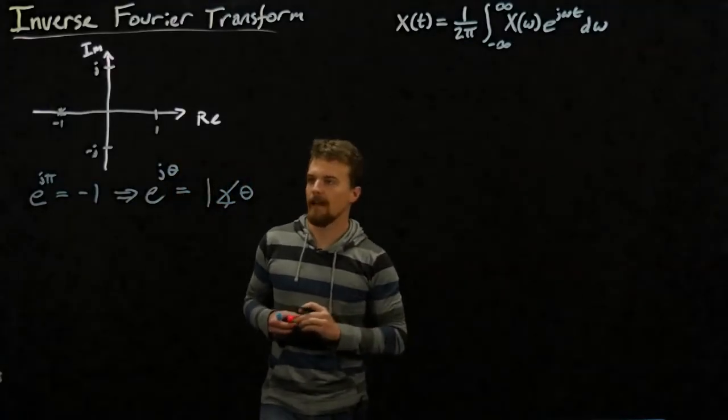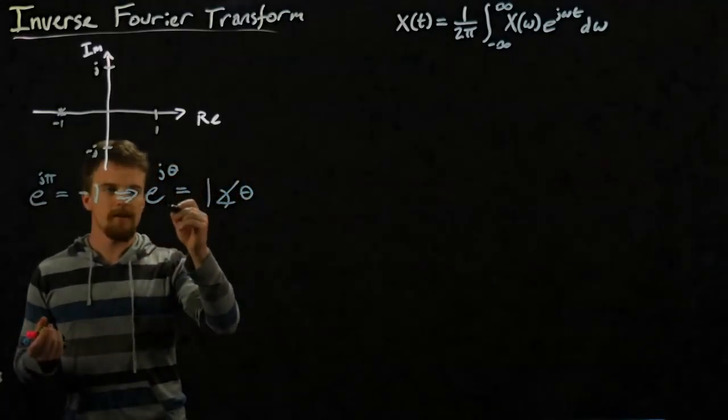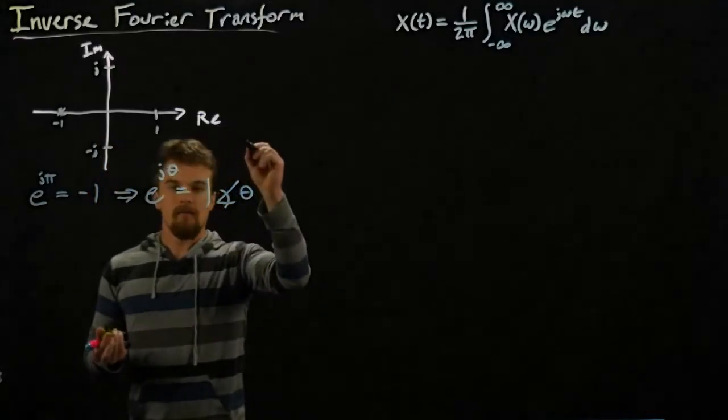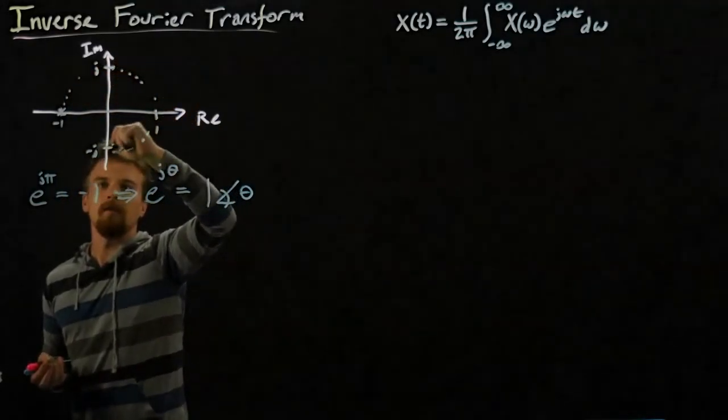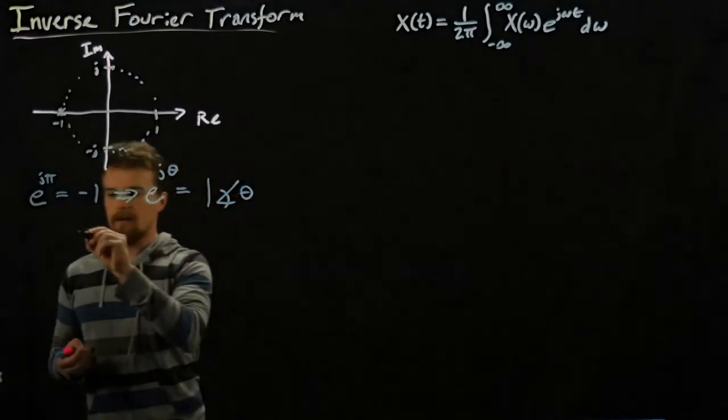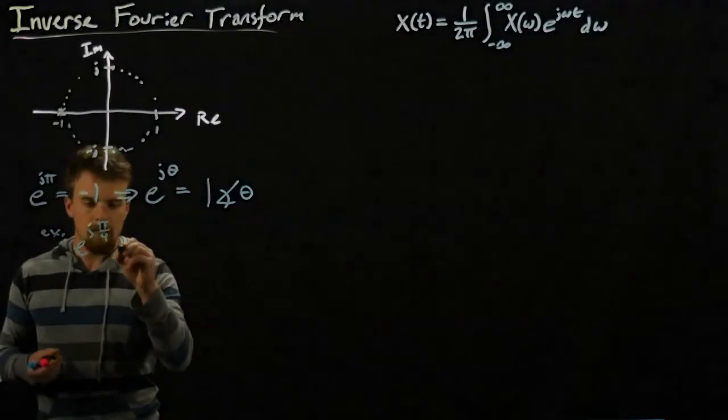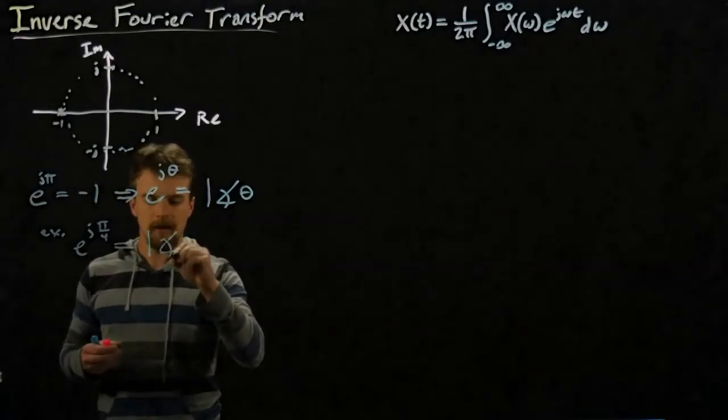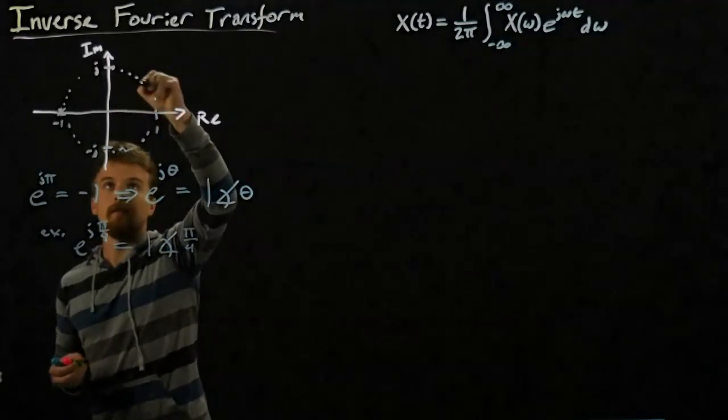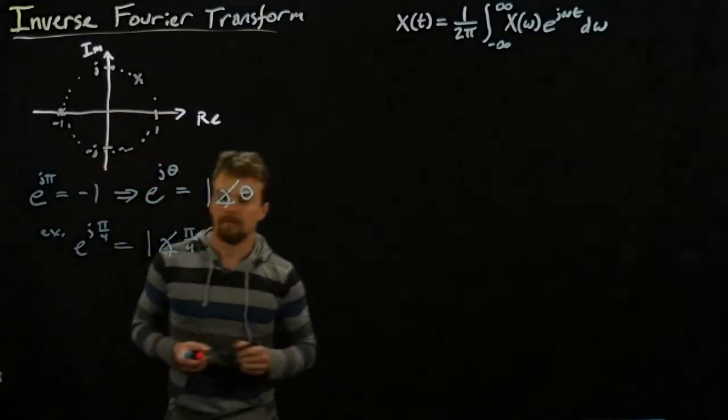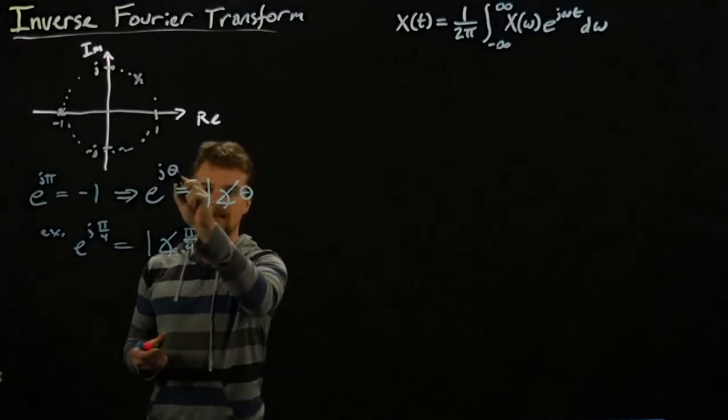So that doesn't really tell us the whole story. The real idea is that e to the j any number, we'll call it theta, is actually equal to a vector in this domain with a magnitude of one and a phase of theta. So what that's saying is that, let's say we picked theta to be pi over four, and let's try to find e to the j pi over four in here. What we're saying, we're claiming is that, so we could draw a unit circle in this domain poorly.